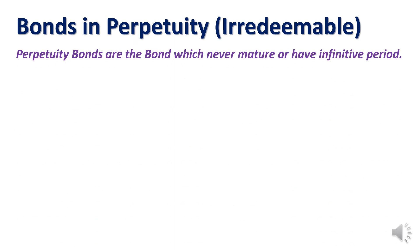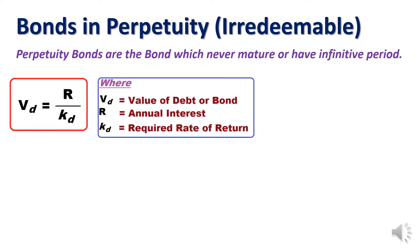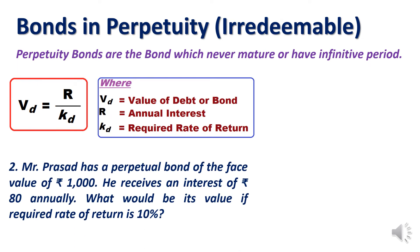Now we will understand bonds in perpetuity, that is irredeemable bonds. An irredeemable bond is one that will not be redeemed as long as the company exists. We consider the company to last an infinite period, so these bonds are never redeemed by the company but can be sold and purchased in the market. For these bonds, the formula is: Vd = R / Kd, where R is the interest amount and Kd is the required rate of return.